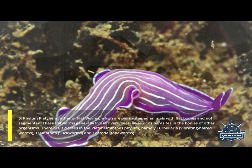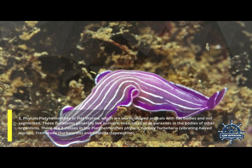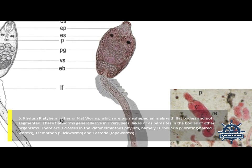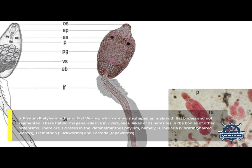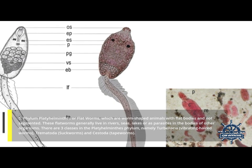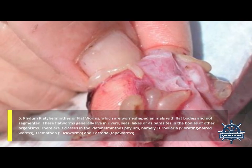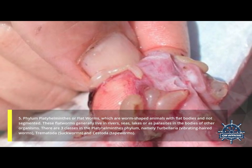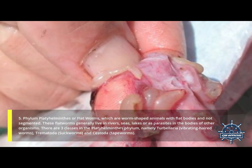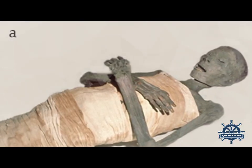Fifth, Phylum Platyhelminthes, or flatworms — worm-shaped animals with flat, unsegmented bodies. These flatworms generally live in rivers, seas, lakes, or as parasites in the bodies of other organisms. There are three classes in the Platyhelminthes phylum: Turbellaria (vibrating-haired worms), Trematoda (suckworms), and Cestoda (tapeworms).